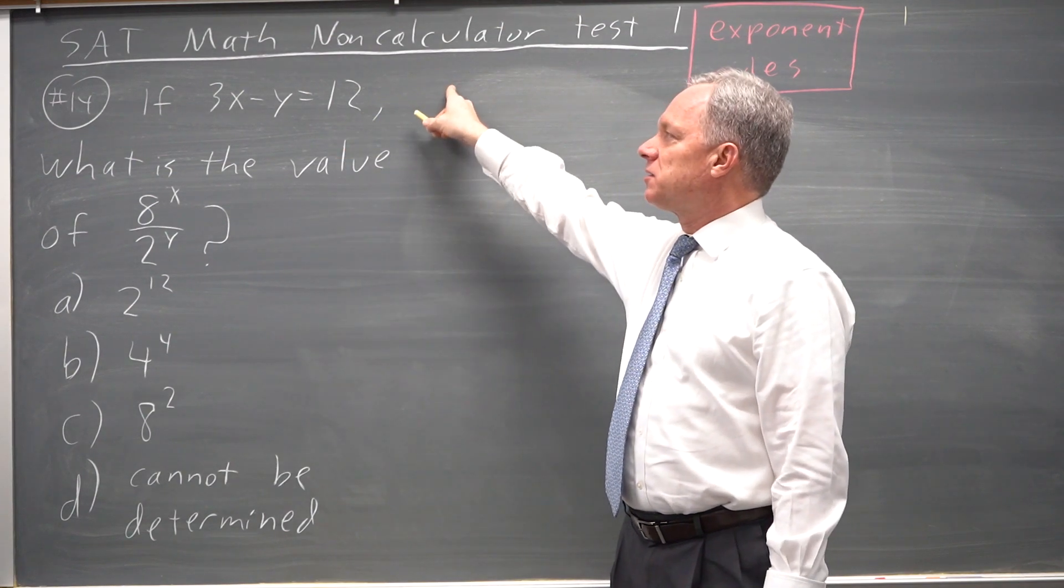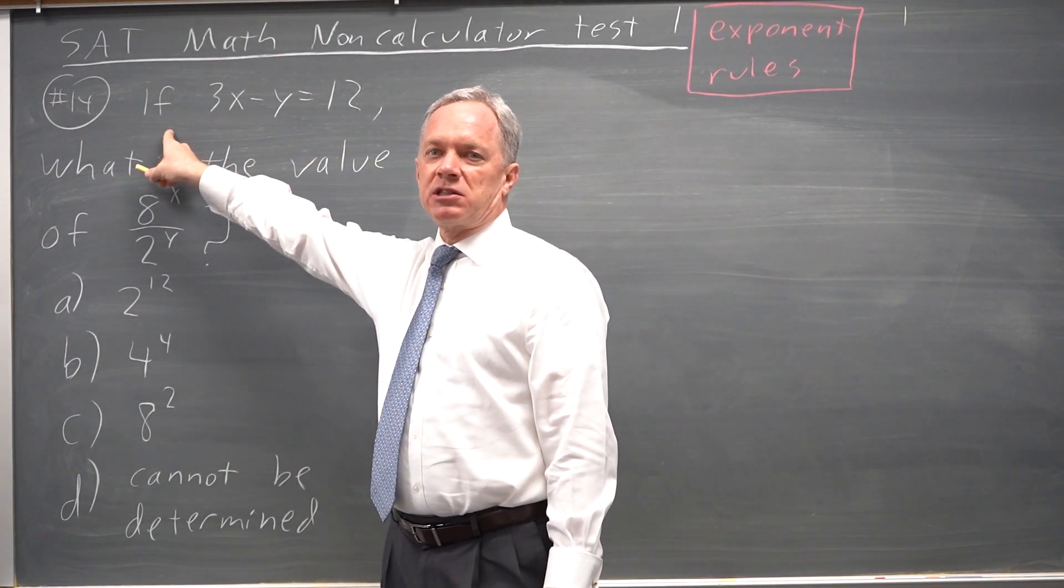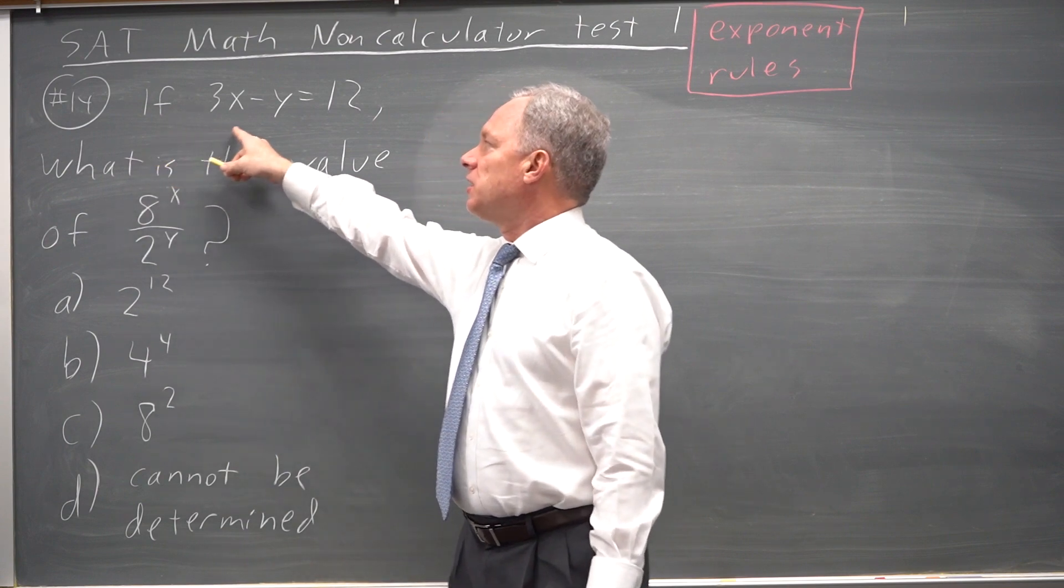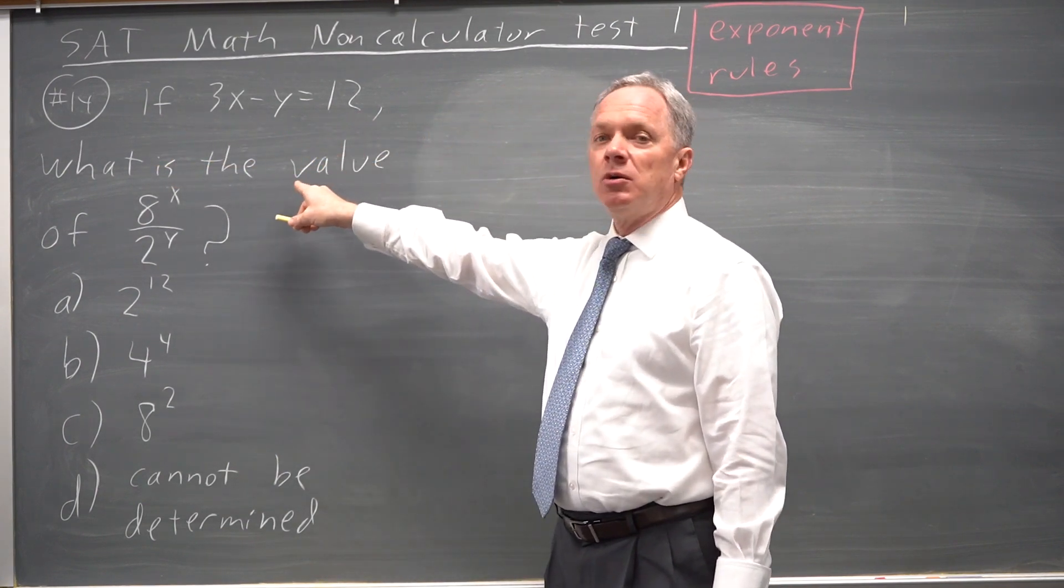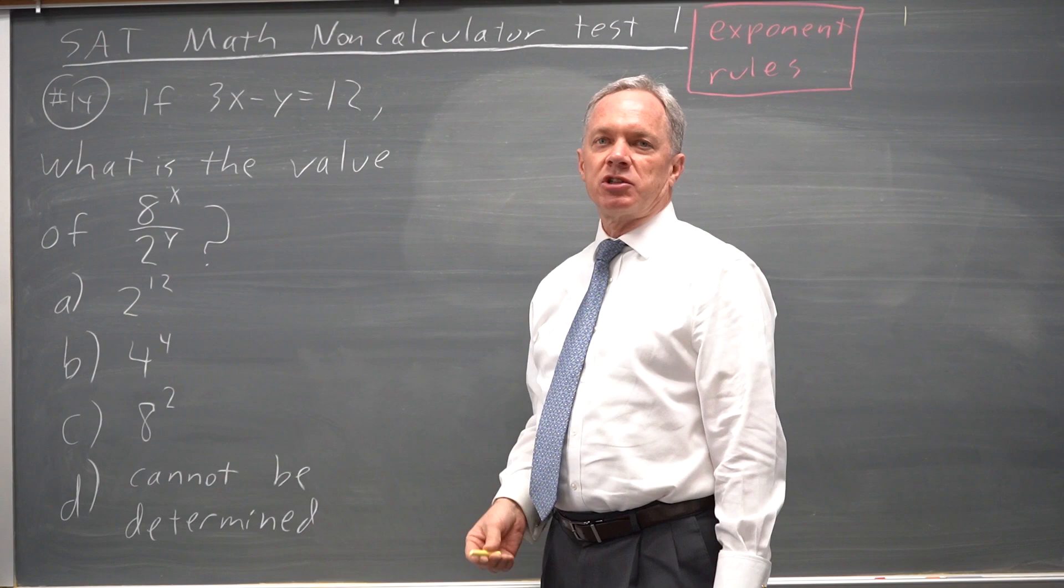This is non-calculator test 1, question 14. So it's one of the hardest multiple choice questions. If 3x minus y equals 12, what is the value of 8 to the x over 2 to the y?